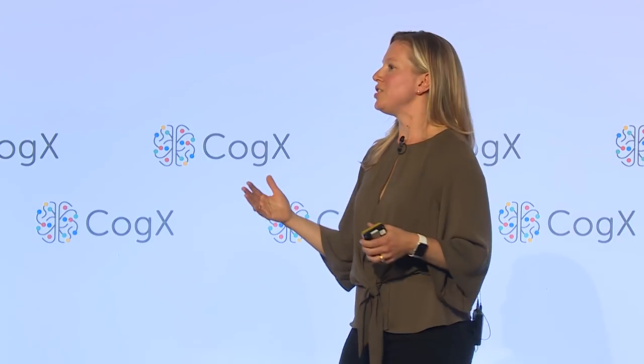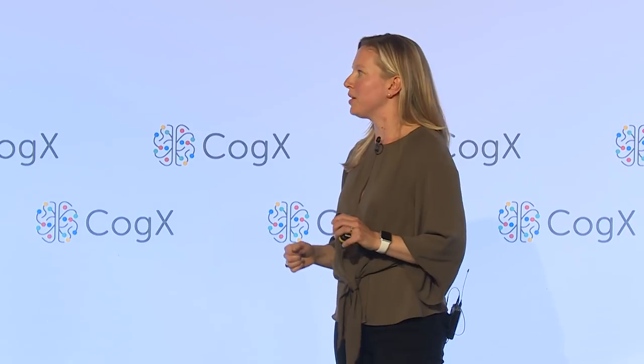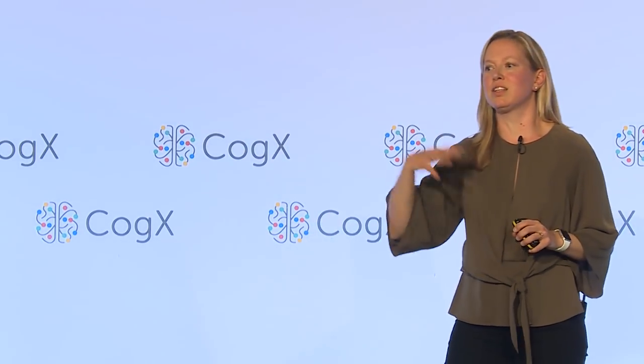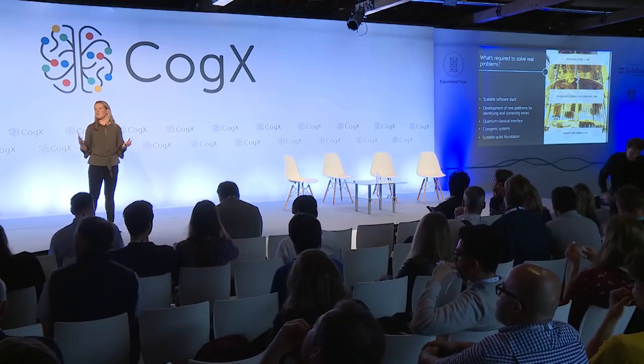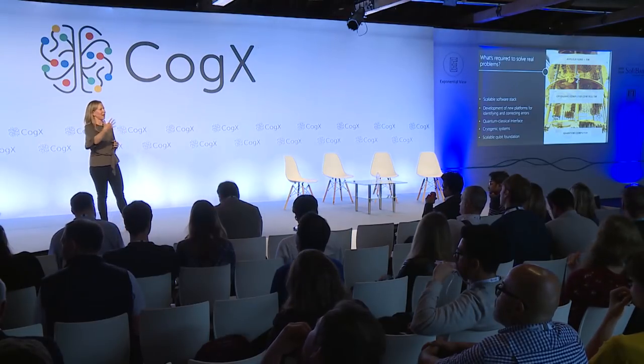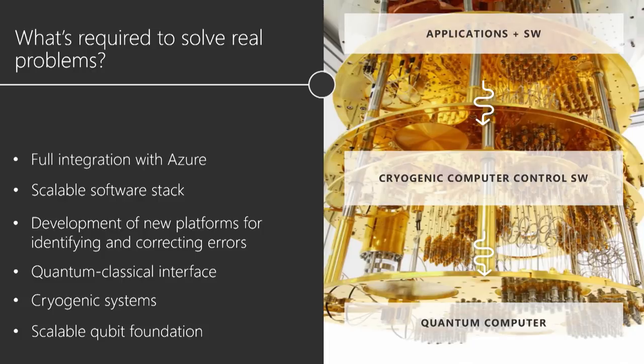We also need cryogenic systems that can scale as we build up these machines. There are new inventions required at the quantum-classical interface — you need a powerful classical computer just to control the quantum hardware itself. We need platforms for quantum error correction to identify and correct errors. We need a scalable software stack to program both the classical and quantum hardware. We need cloud integration for enterprise-grade customers. And we need to write the algorithms and real-world applications. All these elements of the stack are deeply interrelated.